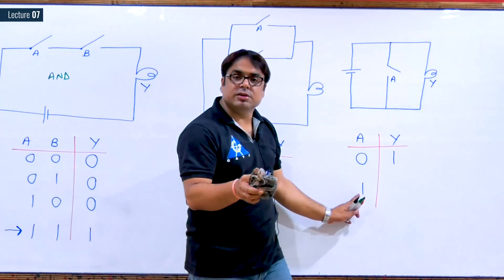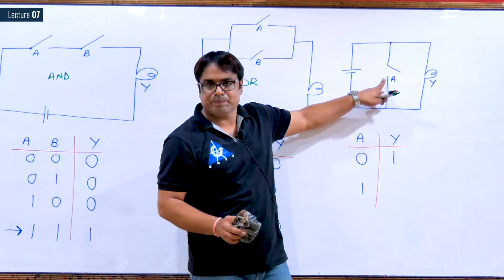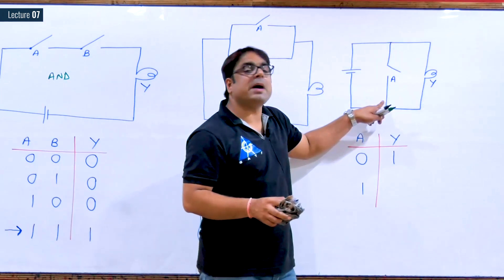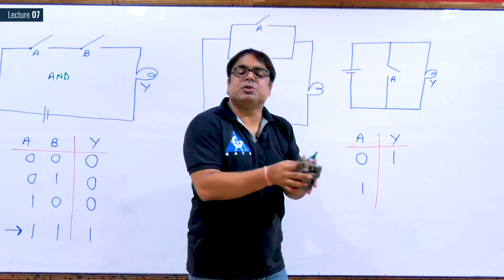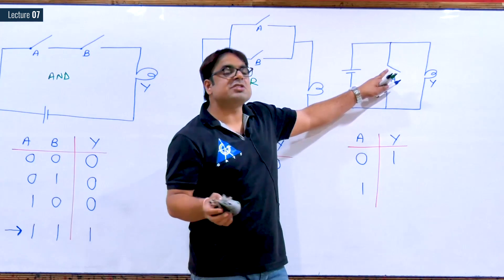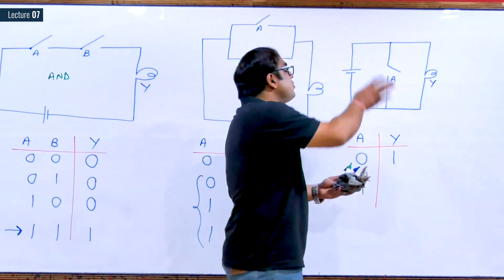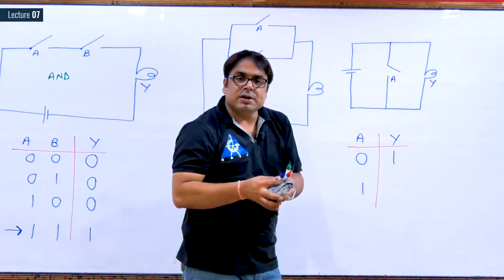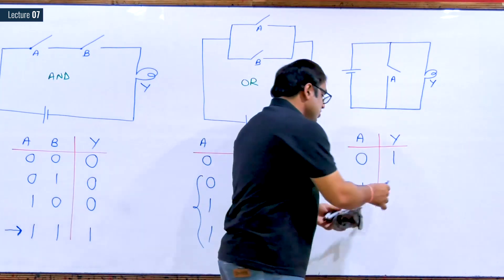If the switch is on, it provides a short-circuit path. Current always travels through the least-resistance path, so this zero-resistance short-circuit path attracts all the current. No current is left for the bulb, so the bulb is not glowing and the logic is low. This is the NOT gate behavior — switch in parallel to the bulb gives complemented output.